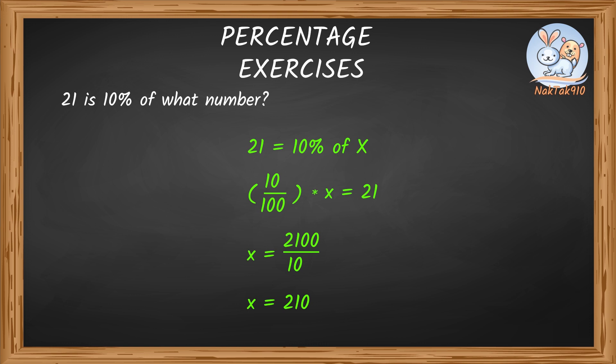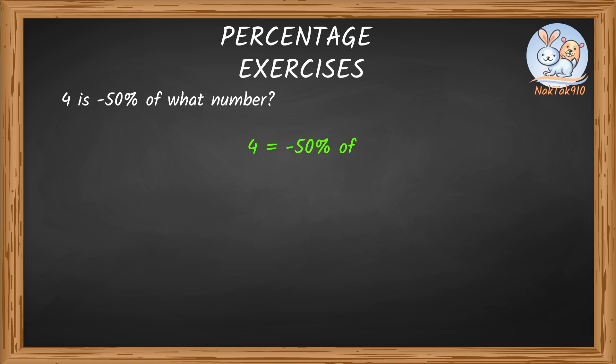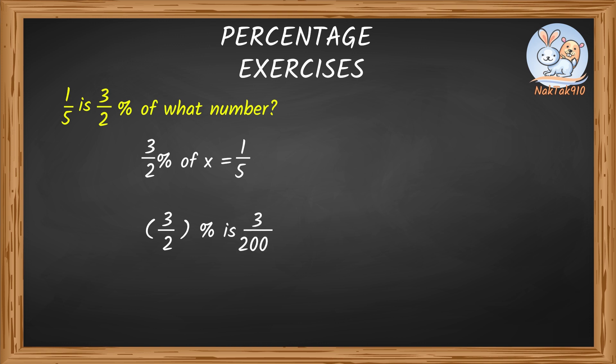Now, let's move to the next question. 4 is negative 50% of what number? Let's write this as 4 equals negative 50% of y. Negative 50 divided by 100 times y equals 4. Finally, y equals negative 400 divided by 50, which equals negative 8. And now, the last one. One-fifth is 3 by 2% of what number? This can be written as 3 by 2% of x equals 1 by 5. 3 by 2% is 3 divided by 200. 3 divided by 200 of x equals 1 by 5. Finally, x equals 200 divided by 15, which can be simplified to 40 divided by 3. Now, let's write this as mixed number 13 and 1 by 3.